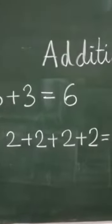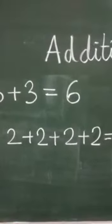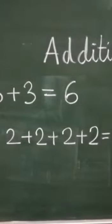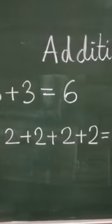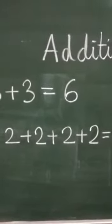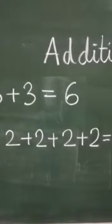Now taking the number 2. 2 plus 2 plus 2 plus 2. 2 plus 2 is 4, 4 plus 2 is 6, and 6 plus 2 is 8.